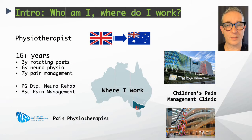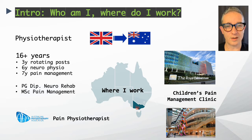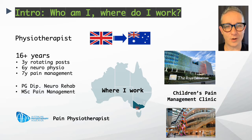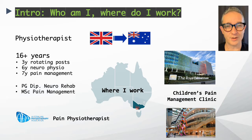Who am I and where do I work? Well, you already know my name is Blaise. I'm a physiotherapist who trained in the UK — you can probably tell from my accent — and I migrated to work in Australia in 2006 and I've been here ever since. I work at the Royal Children's Hospital in Melbourne, at the Children's Pain Management Clinic.